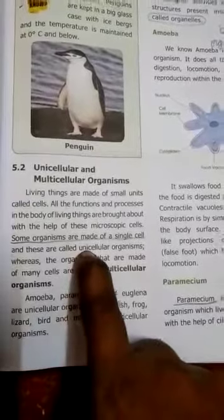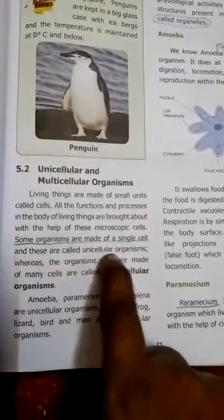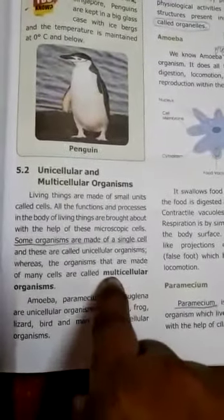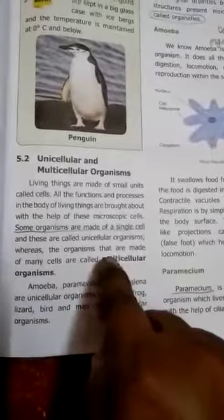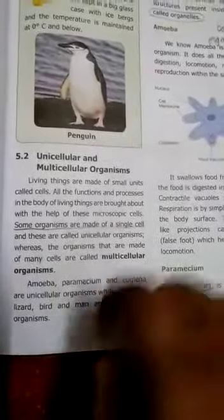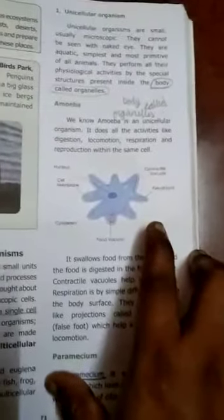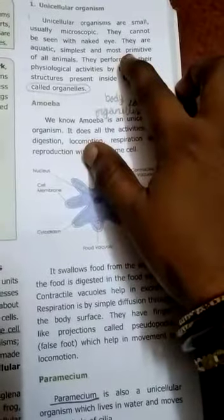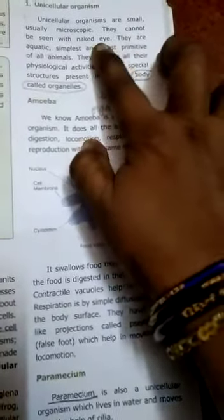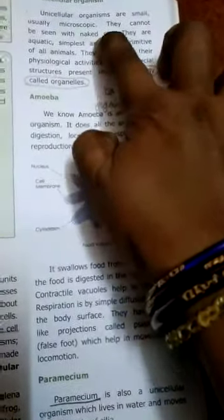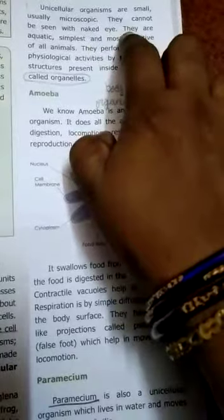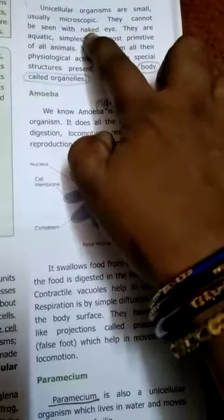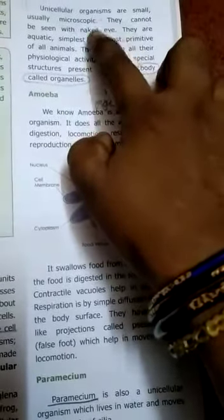Unicellular means the cell is made up of a single cell — 'uni' means single. That organism is called a unicellular organism. Multicellular organisms are made up of many cells. Unicellular organisms are very small and not able to be seen with our normal eye — they are microscopic in nature. The normal eye is called the naked eye.